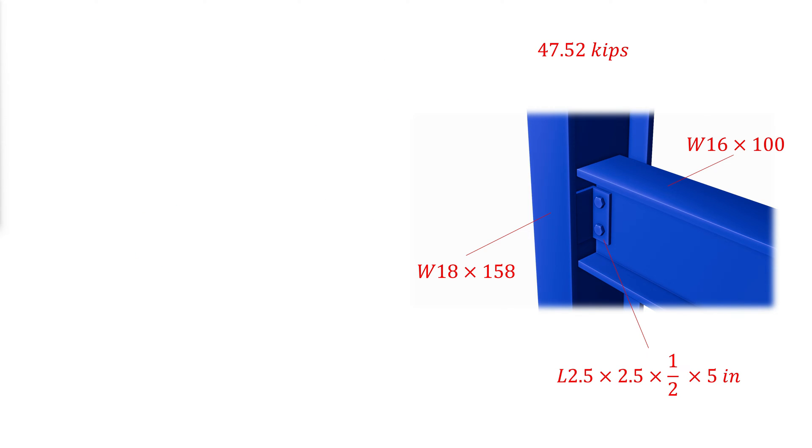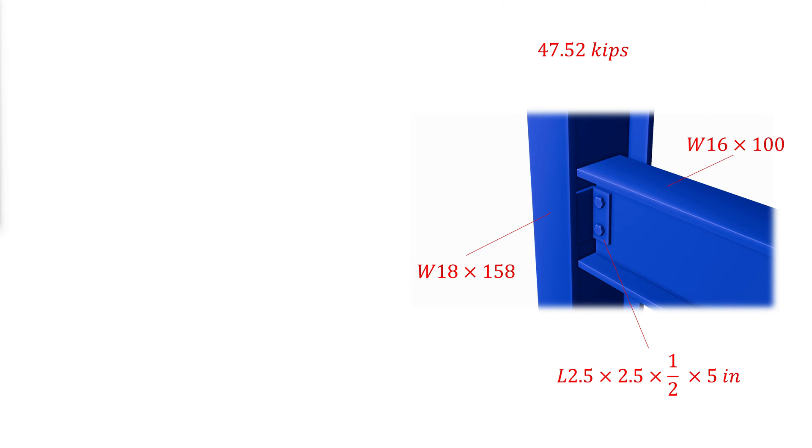We will start by extracting the web thickness of the connected beam. For that, we refer to table 1-1 of the AISC construction manual. We can see that for beam size W16x100, the web thickness is 0.585 inches.